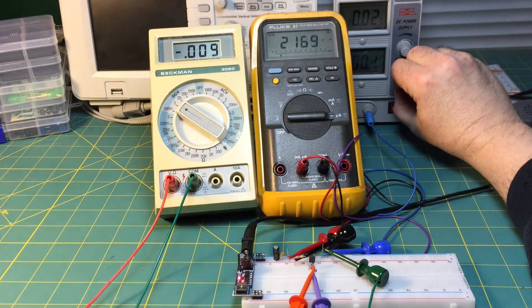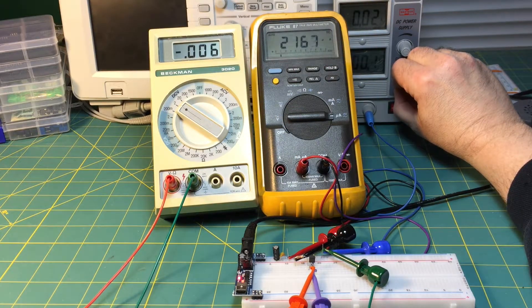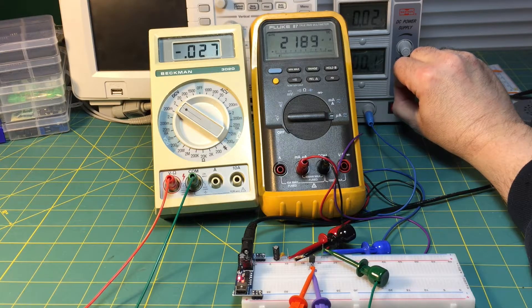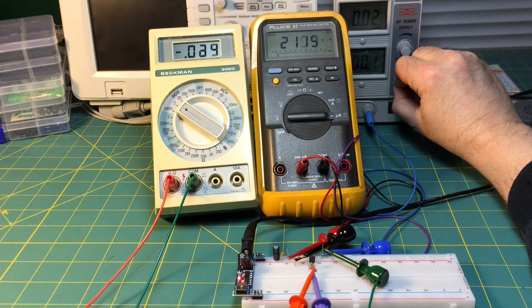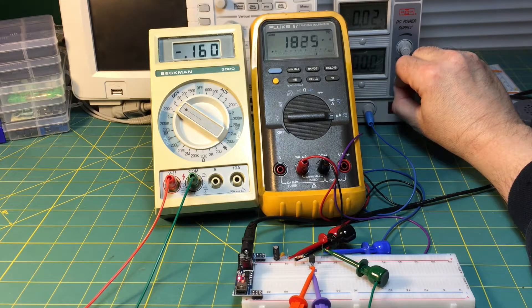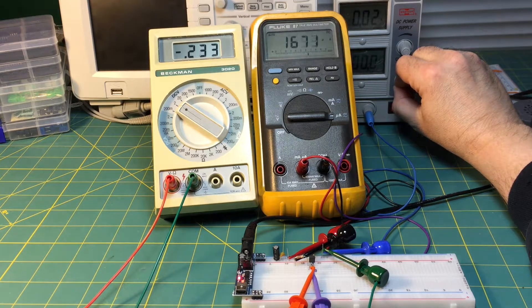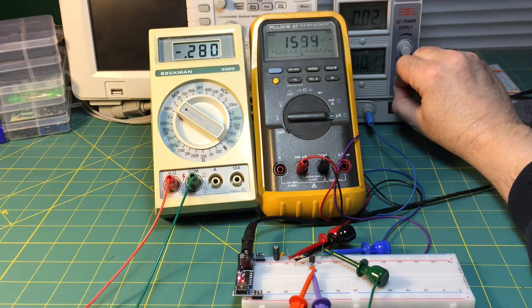Now as I take the gate more and more negative you'll see the drain current will start to drop and what's happening is the depletion region in the channel is getting larger and the channel width is getting more and more narrow and that's allowing less and less current to get through.